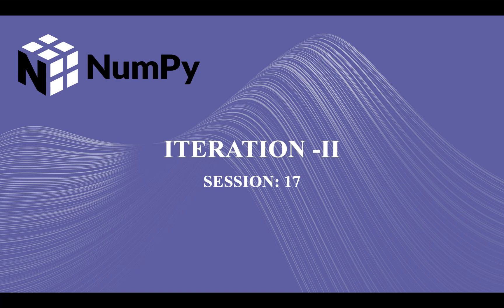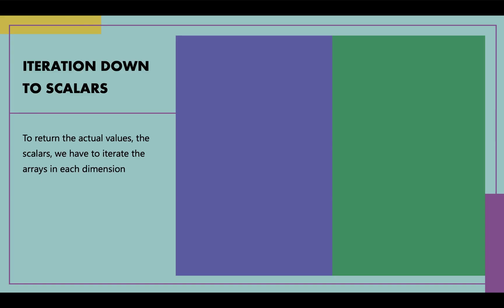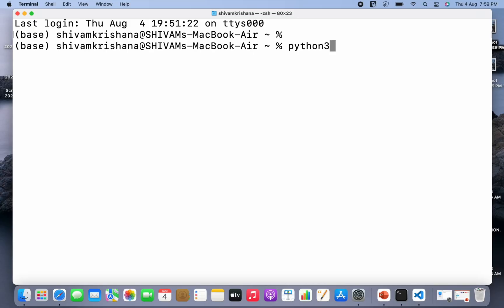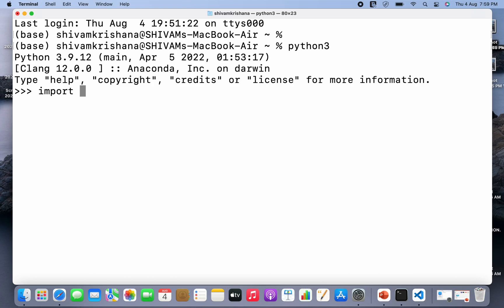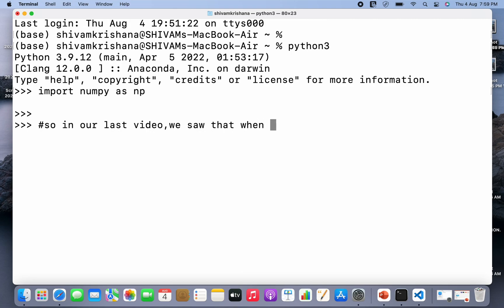Hi guys, welcome back to our course on NumPy. In our last lecture we covered the basics of iteration, and today we are going to continue with this topic. So let's get started. To return the actual values — the scalars — we have to iterate the arrays in each dimension. Let me write Python 3, hit enter, and import numpy as np as usual. Let's have a quick recap.